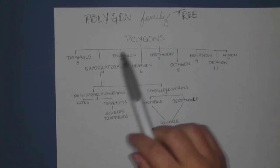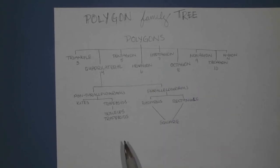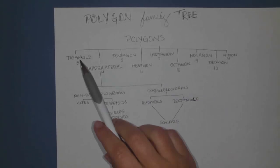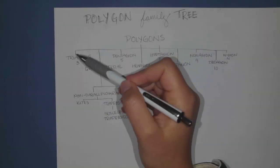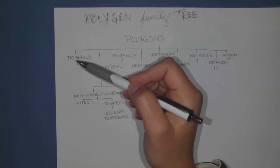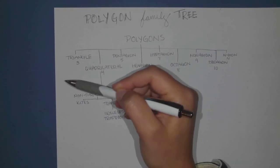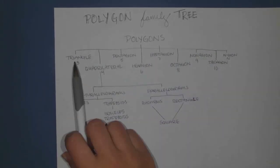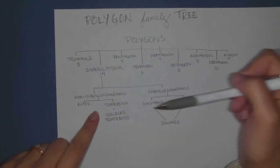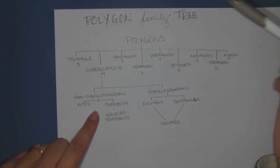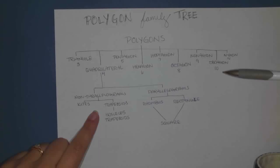Circles are not on this list because circles are not technically a polygon. We've got triangles, which we've studied a lot, and I could have another branch going off for equilateral, scalene, and isosceles triangles, but I didn't include all that because we've moved past triangles. This chapter is really focusing on quadrilaterals, but here are all the other polygons that we know and love.